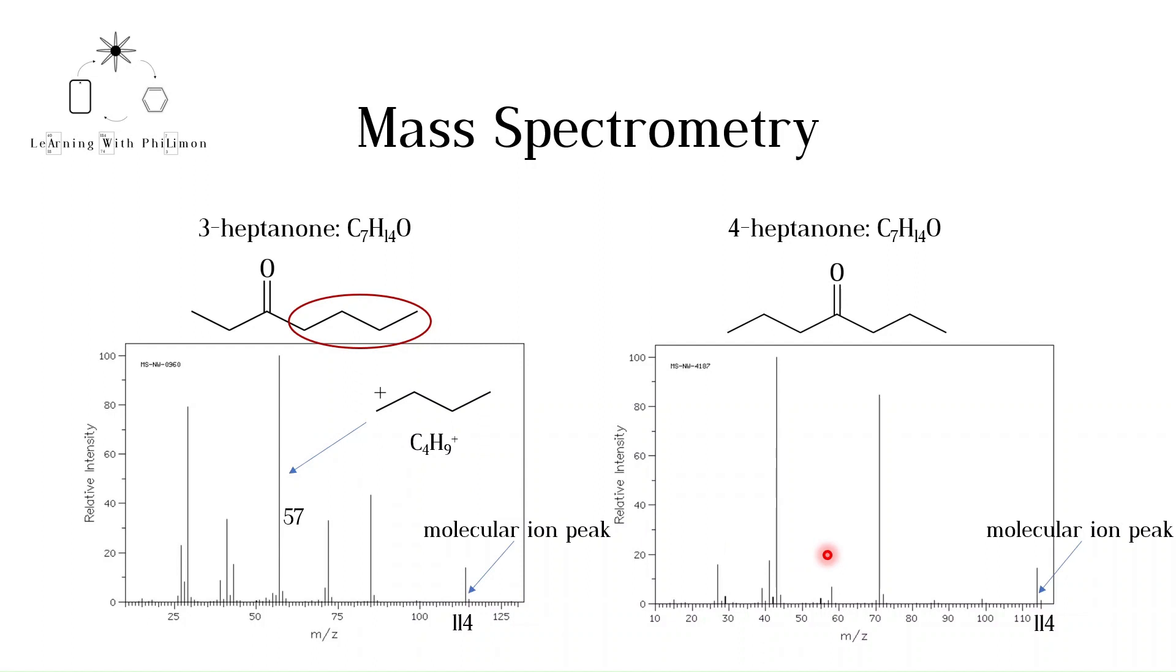It would be unlikely to break off a 4-carbon chain from 4-heptanone without including the oxygen atom. This is why we see a peak at 71 instead. This corresponds to this fragment, which includes 4-carbon atoms and the oxygen atom, C4H7O+.